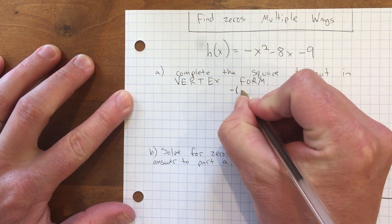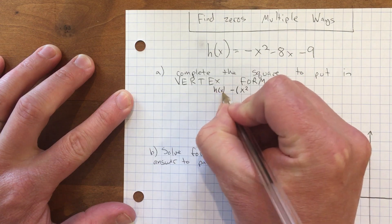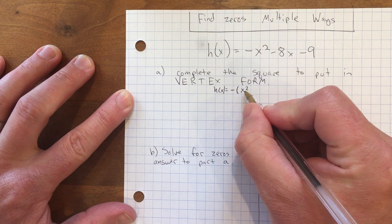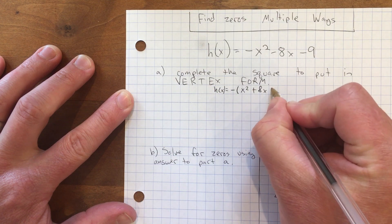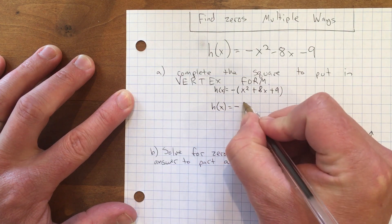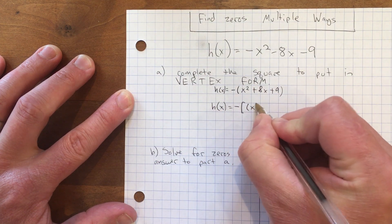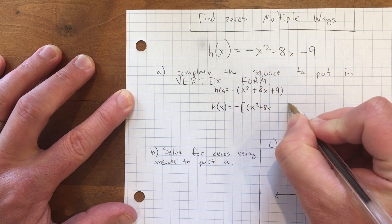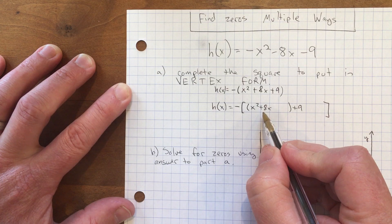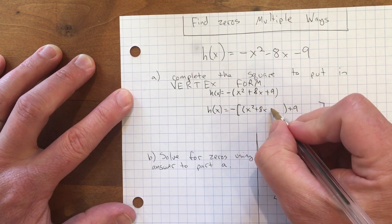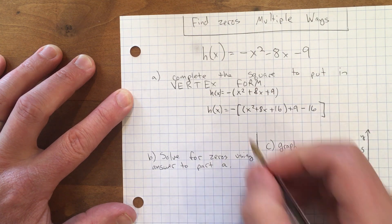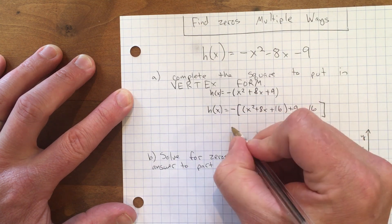h(x) becomes a negative sign, and then inside parentheses we'll do x² + 8x + 9. Now to complete the square, I leave x² + 8x blank and put +9. Half of 8 is 4, and 4 times 4 is 16, so I'm going to add 16 here but then subtract it on the outside.